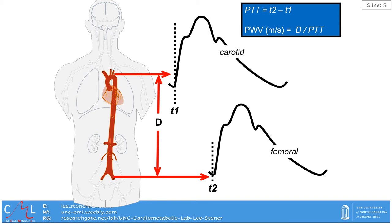If we use this technique to simultaneously measure the pulses at two different sites they will look something like this image here. The upstroke of the carotid pulse is going to begin before the upstroke of the femoral pulse because it takes some time for that pulse to travel between point A and point B. The way that we calculate the pulse transit time is by looking at the time between the foot of the carotid wave and the foot of the femoral wave.